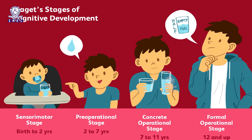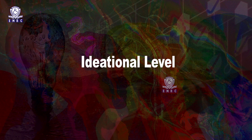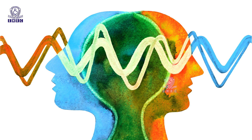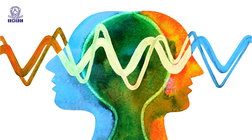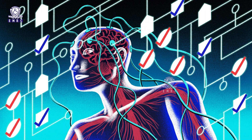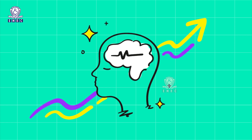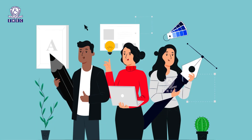Piaget has called this level sensory-motor thought. The second level is the ideational level, which is of higher level and depends upon ideas. Man's superiority over other species is the direct result of ideational thinking. Ideational thinking is the process of generating numerous alternative ideas, resolving the gap between the vision and the current reality.